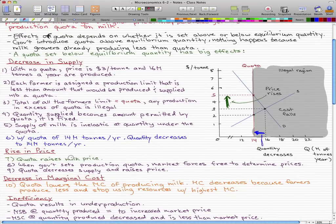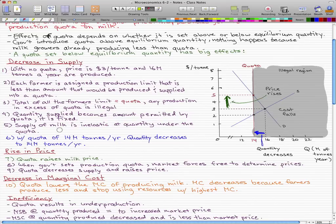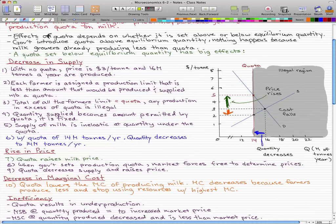Now the quota also decreases the marginal cost. The quota lowers the marginal cost of producing milk. We'll just reflect that here. The marginal cost falls. The quota lowers the marginal cost of producing milk and the marginal cost decreases because the farmers produce less. They produce less and stop using resources with the highest marginal cost. So the cost falls.